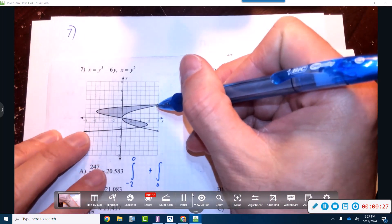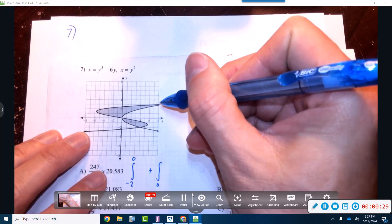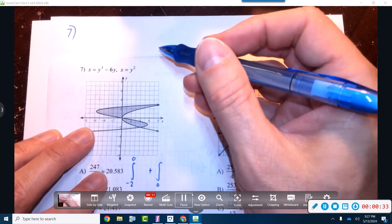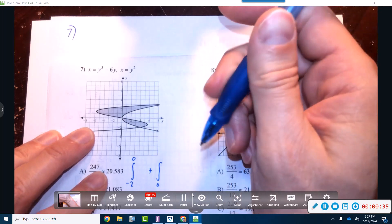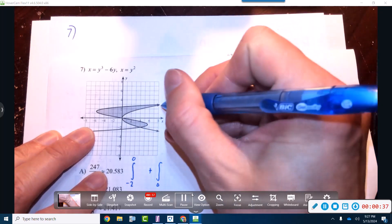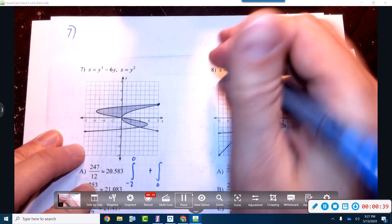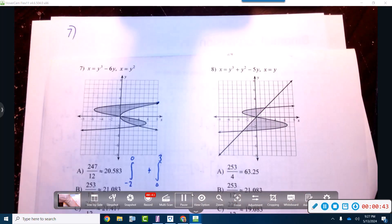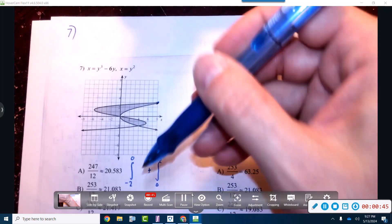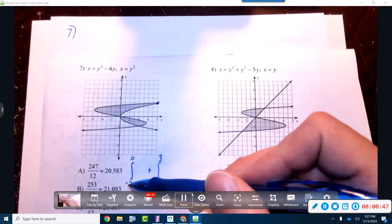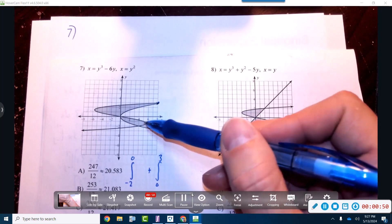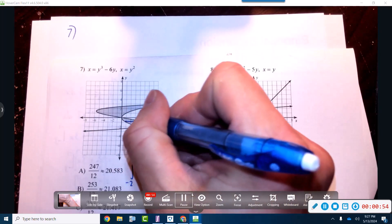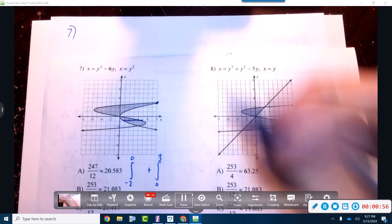Where do they intersect? Zero to three. Okay, so we've got two integrals now. In this first one here from negative two to zero, we have the cubic dominating. Now this is going to be a dy.